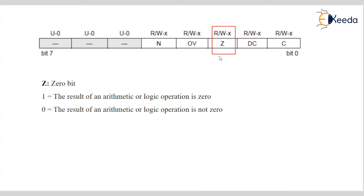Next is the Overflow flag, indicated by OV. It is also readable and writable. When you are doing counting — for example, counting from 0 to 10 — when the microcontroller reaches 10, it will reset that count and raise the Overflow flag. This indicates that an overflow is happening.